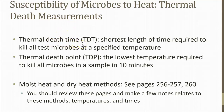Thermal death time is the shortest amount of time required to kill an organism at a specified temperature. For example, if holding at 100 degrees Celsius for five minutes kills them all, that's the thermal death time — at three minutes it only kills 50%, so that's not effective. Thermal death point is the lowest temperature that can kill all organisms in a sample in 10 minutes. Point is temperature; time is time.